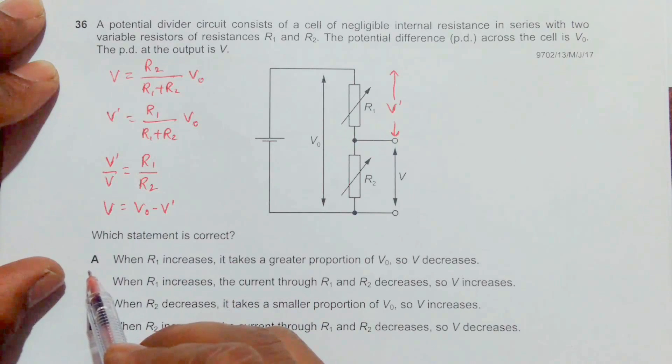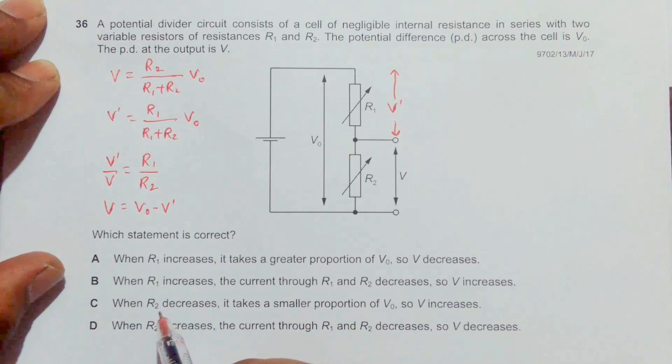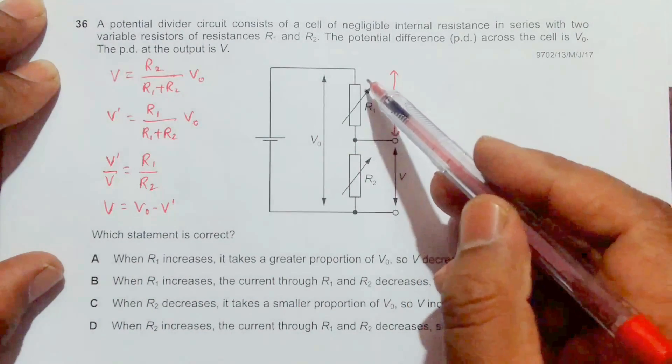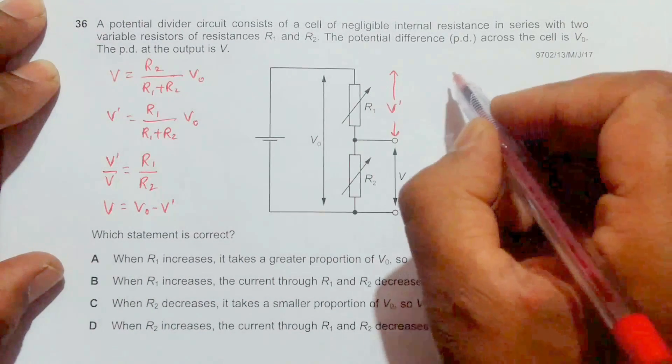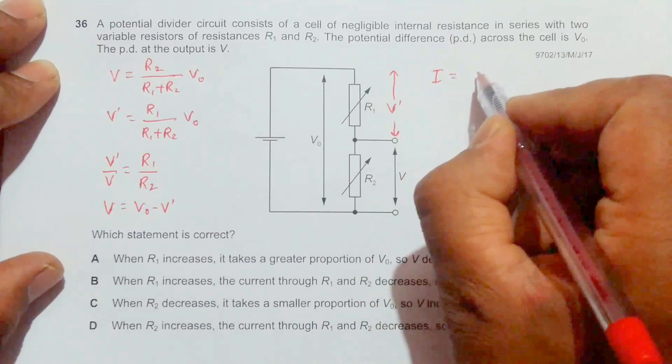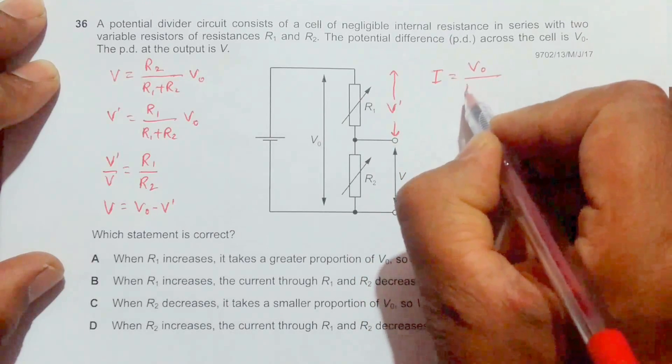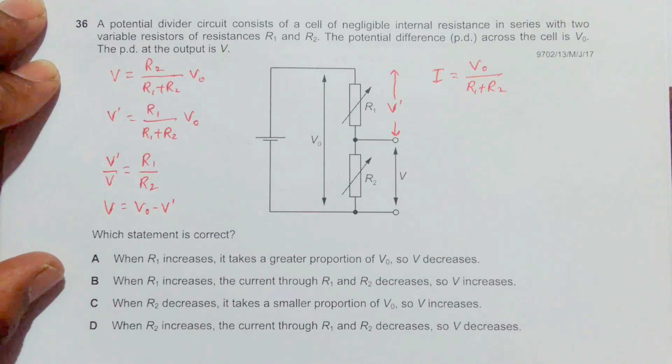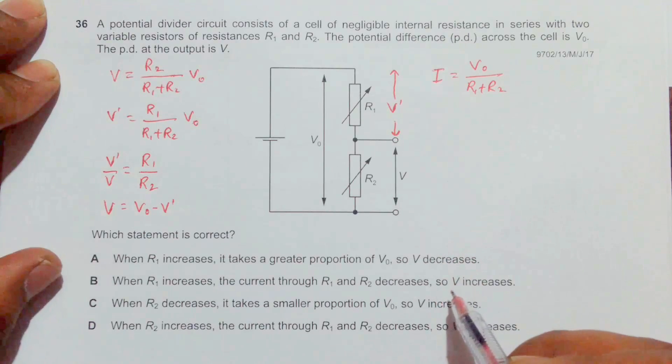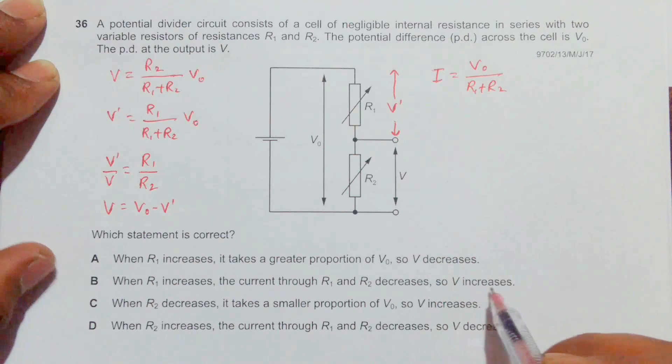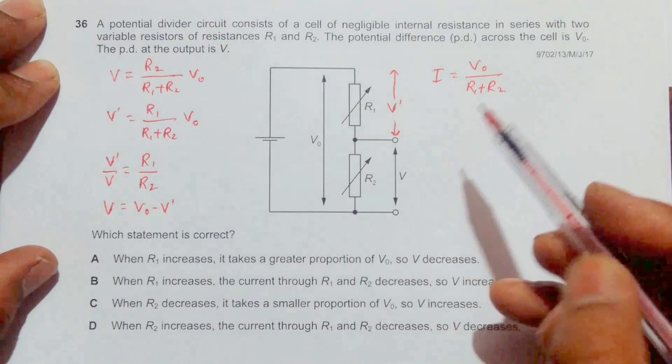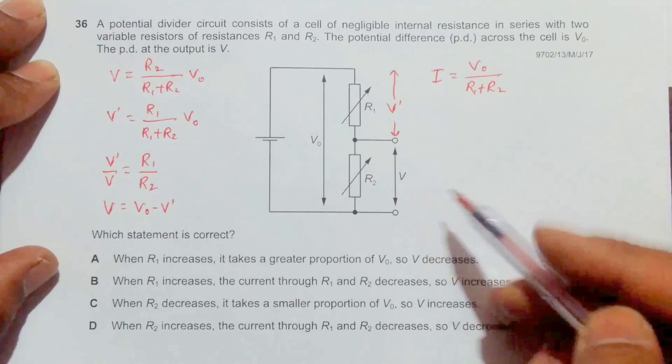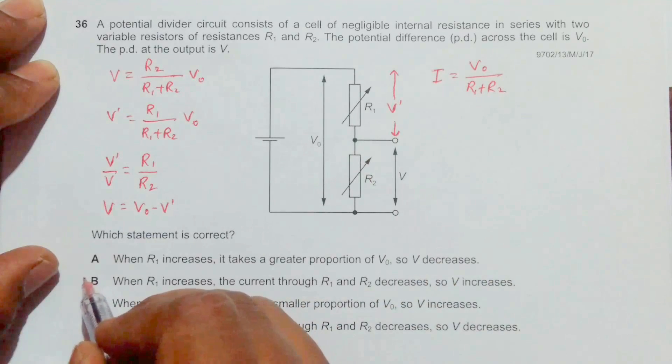Let's check the other choices. Choice B says when R1 increases, the current through the whole circuit decreases. Yes, because current equals V naught by R1 plus R2, so current decreases. But this doesn't ensure V increases, because if R2 is constant and current decreases, V can decrease. This statement is not correct.